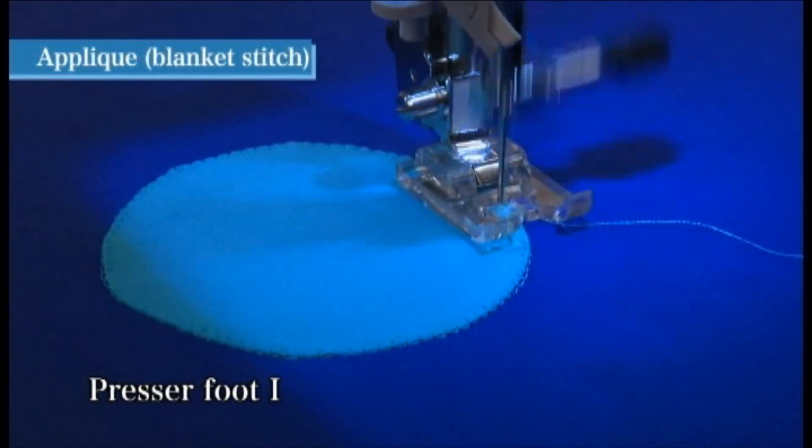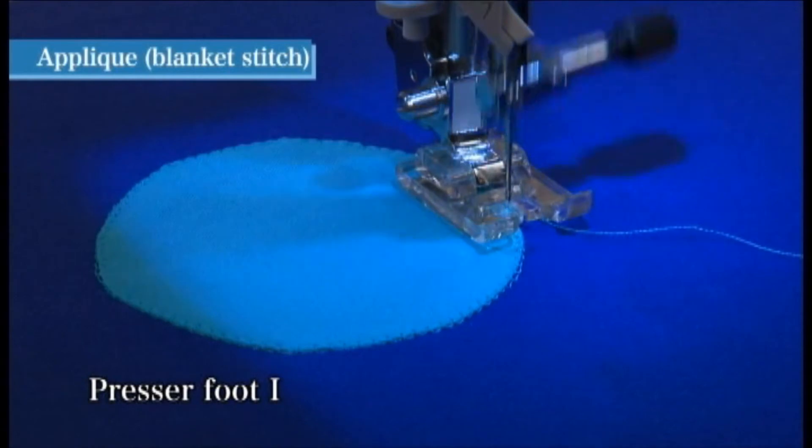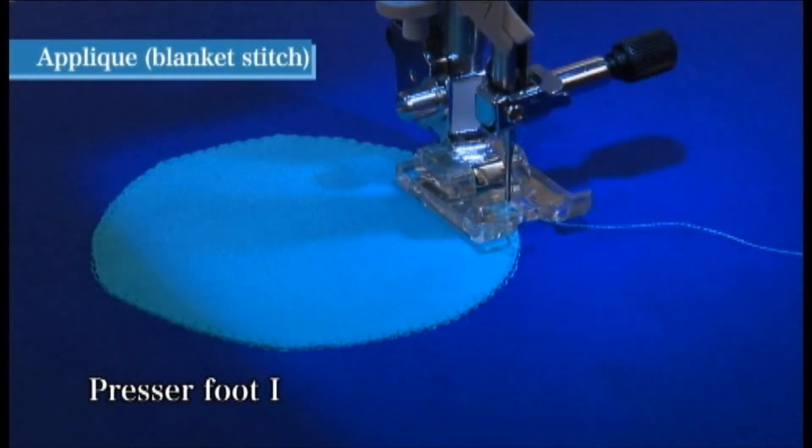When sewing the applique is done, press the reverse stitch button to sew a few lock stitches. Sewing lock stitches outside the applique fabric looks better and neat.